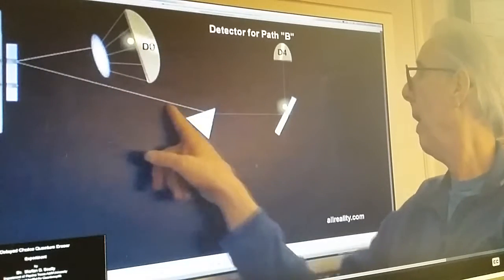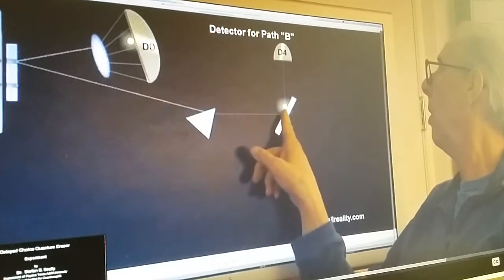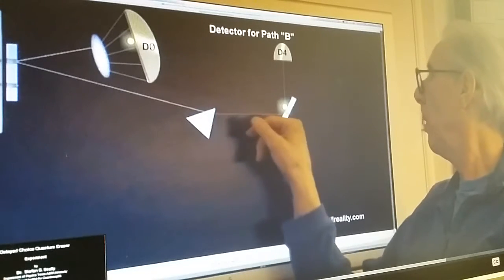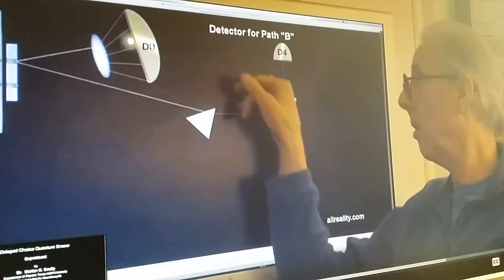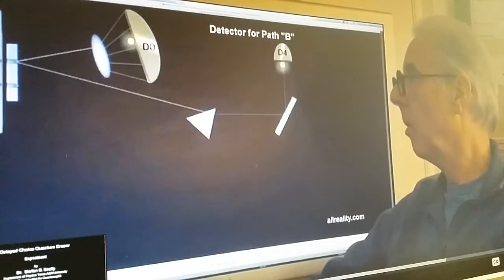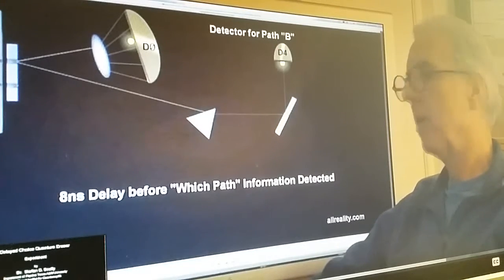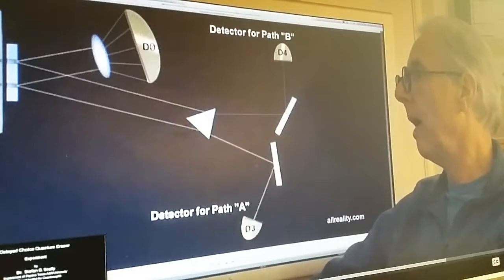The other half of the pair takes a much longer route, goes through a prism, hits a half-silver mirror, and gets detected. And there's an eight-nanosecond delay.